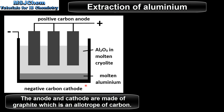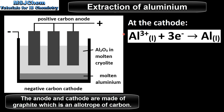Because this is an electrolytic cell, the anode is positive and the cathode is negative. At the cathode, aluminium ions gain electrons to form molten aluminium, which is reduction. The molten aluminium has a higher density, therefore it sinks to the bottom of the cell.